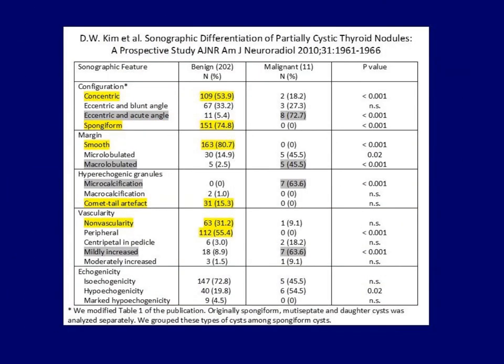In this table, I present the results of Kim and co-workers, who analyzed more than 200 surgically treated thyroid nodules. Regarding the basic subtypes, concentric (central type) and spongiform cysts were found almost exclusively in benign lesions, while peripheral type cysts — named eccentric by the authors — were the typical presentation of cancers. The authors found no malignancy among nodules presenting comet tail artifacts.